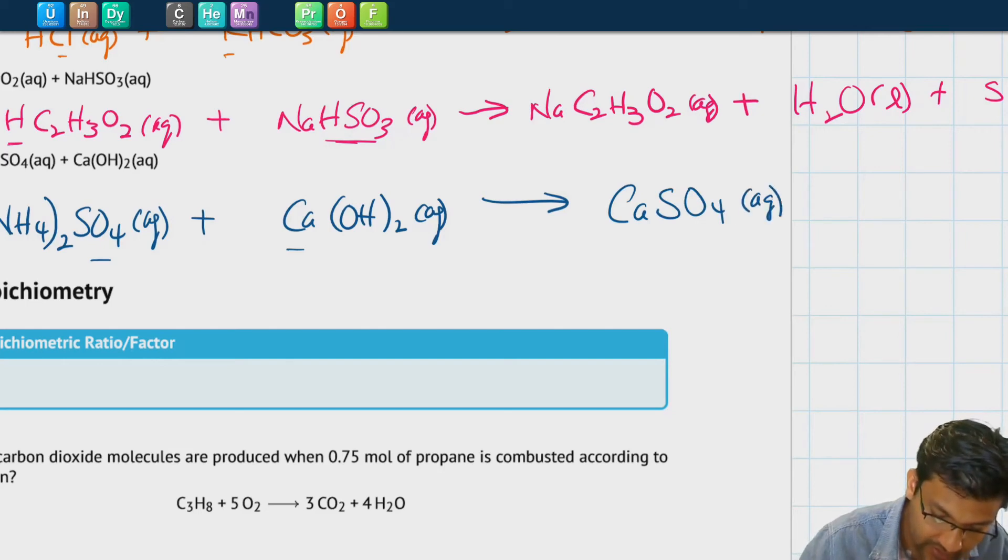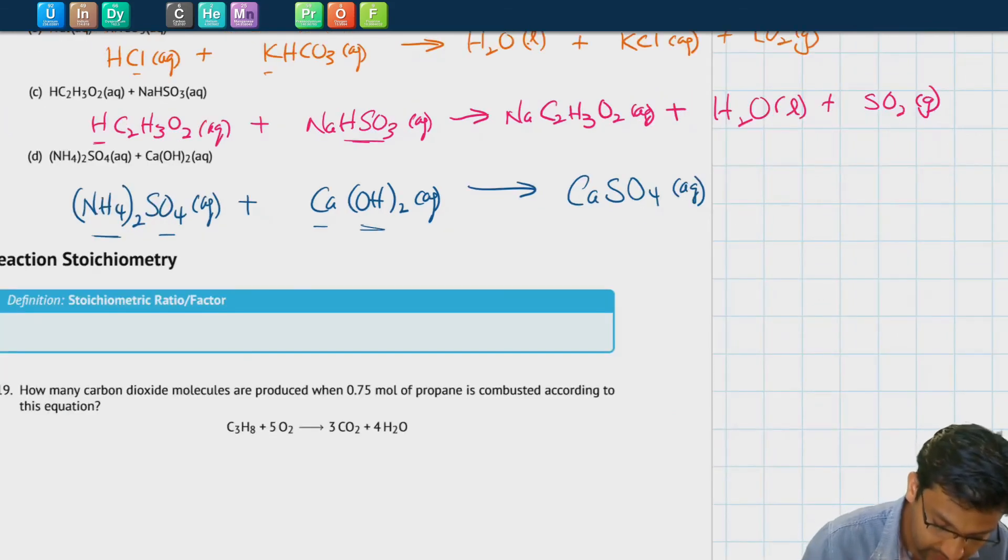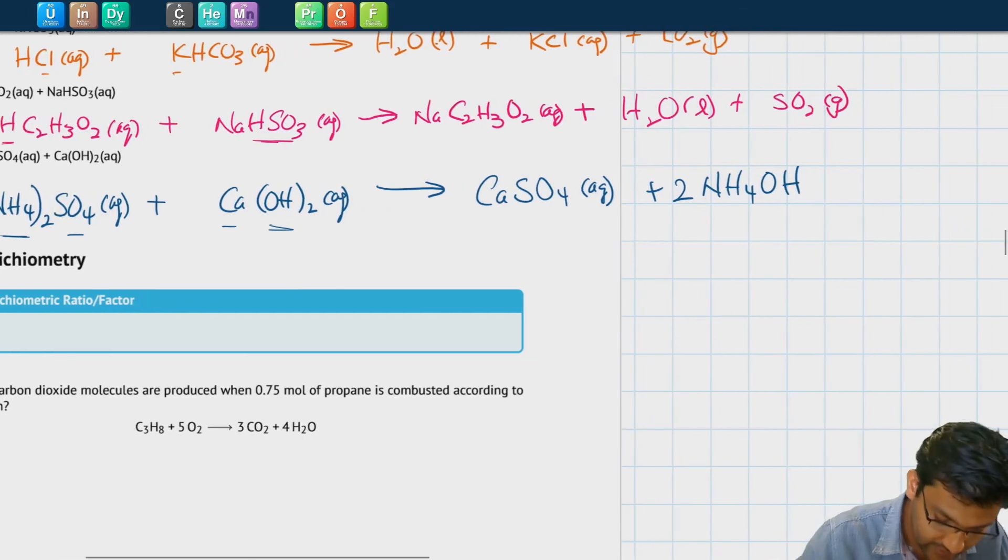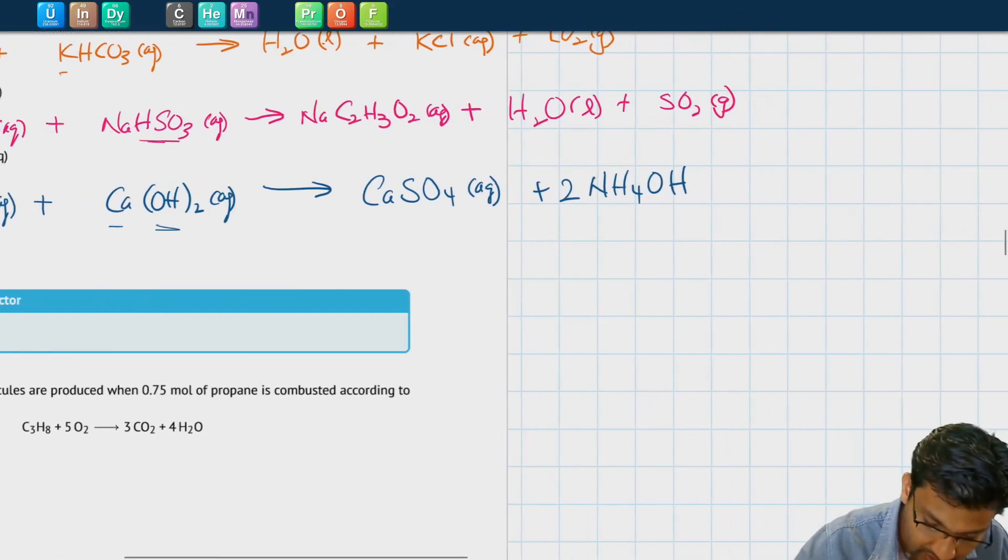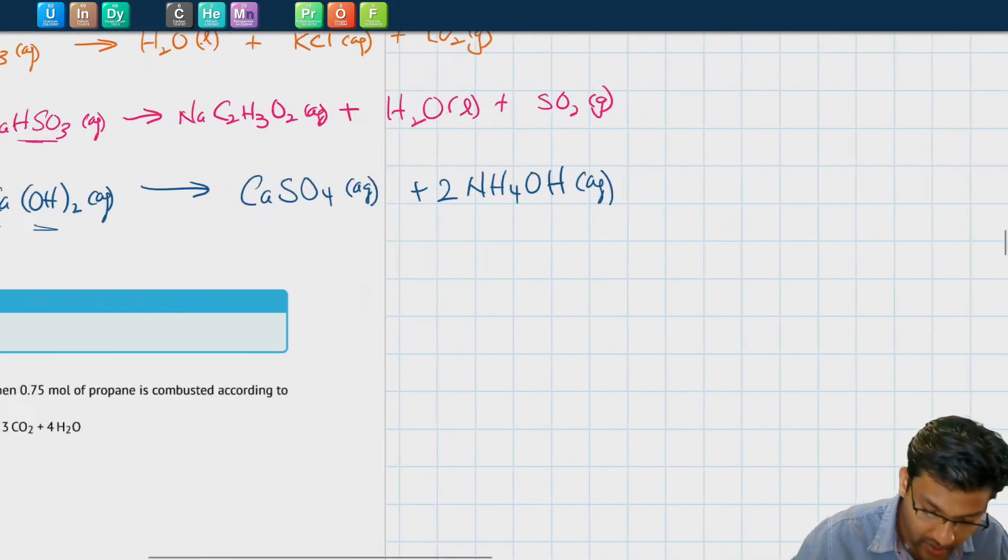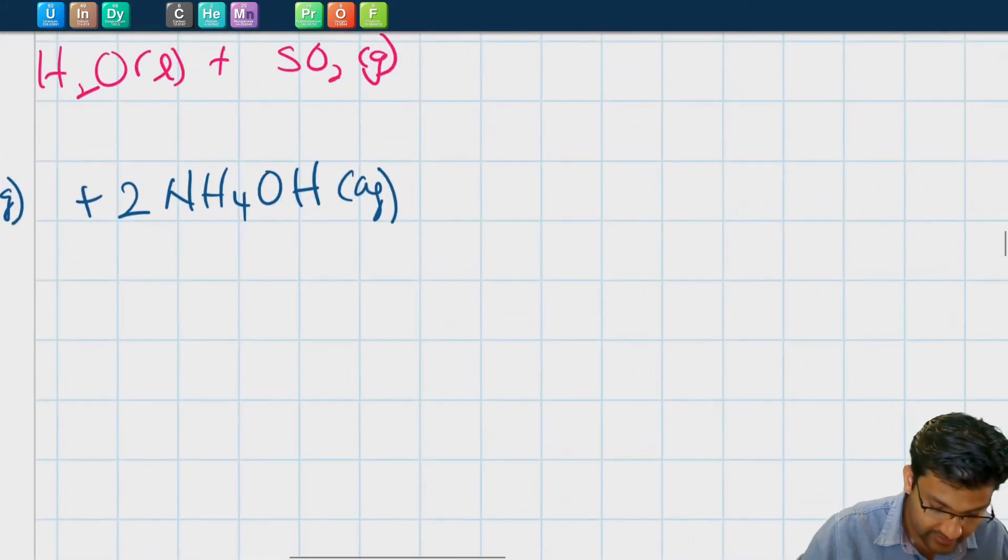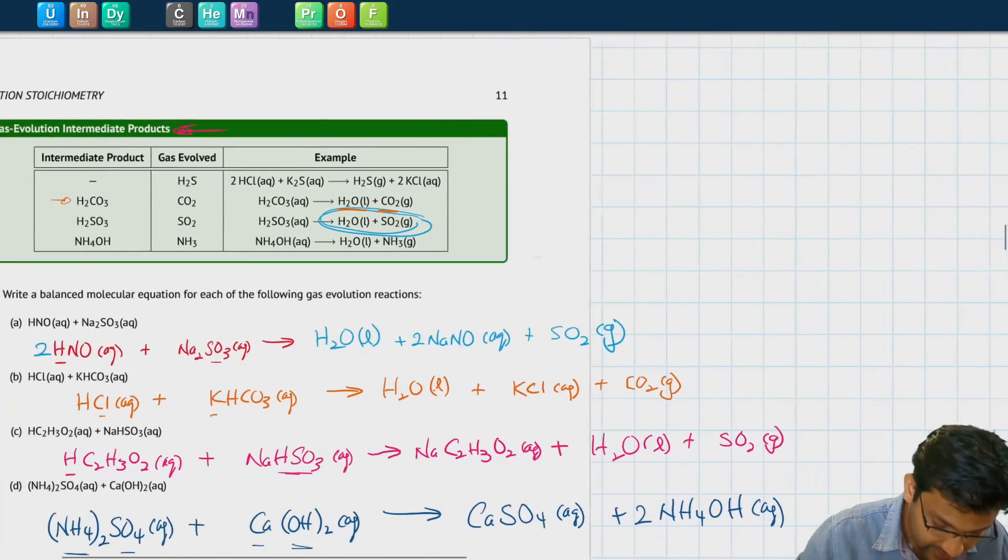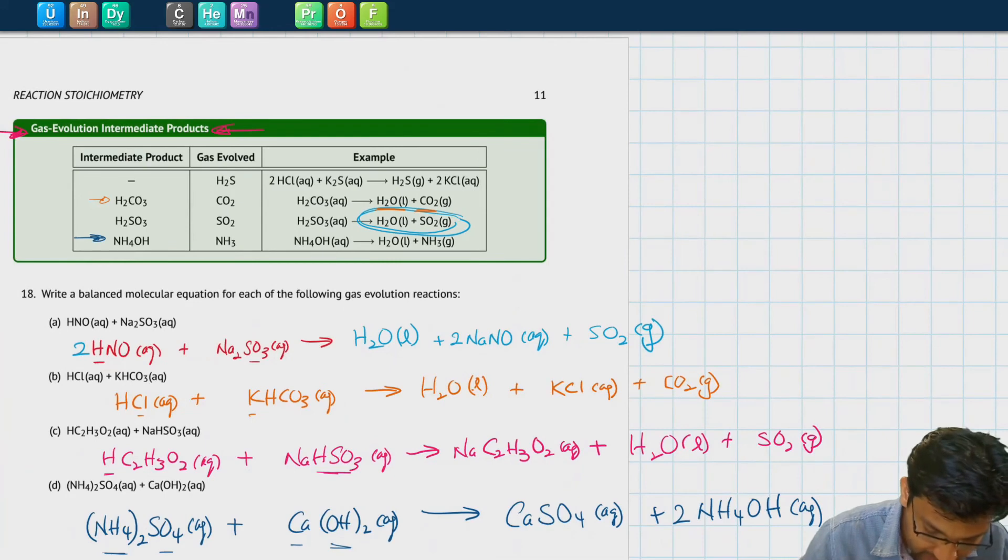The ammonium reacts with the hydroxide to form ammonium hydroxide, but there's two of them. Two hydroxides and two ammoniums aqueous. But we looked at the table, and we recognized that ammonium hydroxide breaks down to form water and ammonia gas.